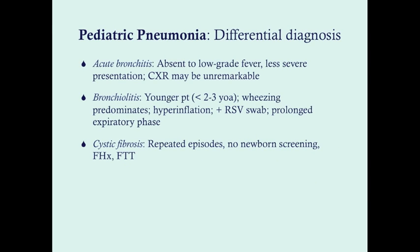For our differential, especially with younger children: acute bronchitis typically has absent to low-grade fever, a less severe presentation — even less severe than viral pneumonia — and the chest x-ray might be unremarkable. With viral pneumonia, you can expect some findings on chest x-ray, usually streaking. Bronchiolitis affects much younger children, so you can pretty much rule it out if the child is older than three. Wheezing will predominate. On chest x-ray you'll often see hyperinflation. Age is the way we differentiate bronchiolitis. If you get a nasopharyngeal swab, you'll isolate RSV in most cases, and you can also see a prolonged expiratory phase.